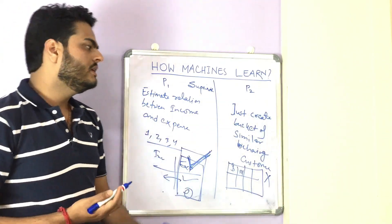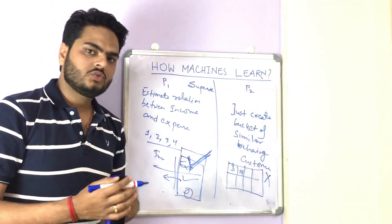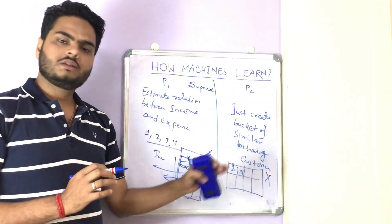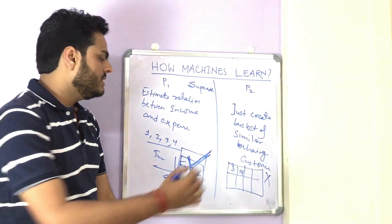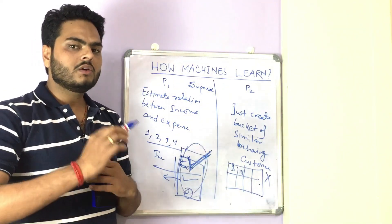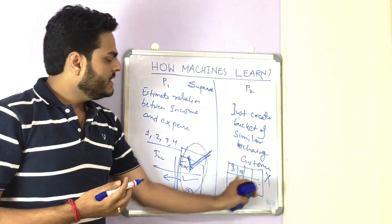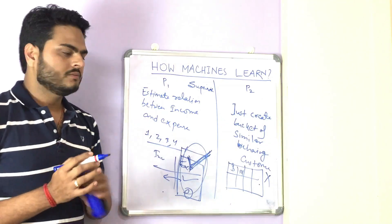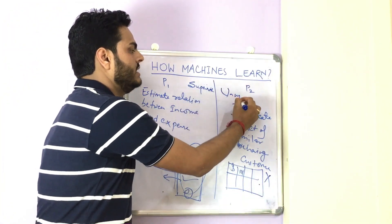On the other hand, there might be cases — like bucketing similar customers in a superstore — where we do not have anything to predict or estimate, and in the data we do not have a labeled column. Remember, a labeled column means something which we want to predict or estimate. This is an example of an unsupervised machine learning algorithm.